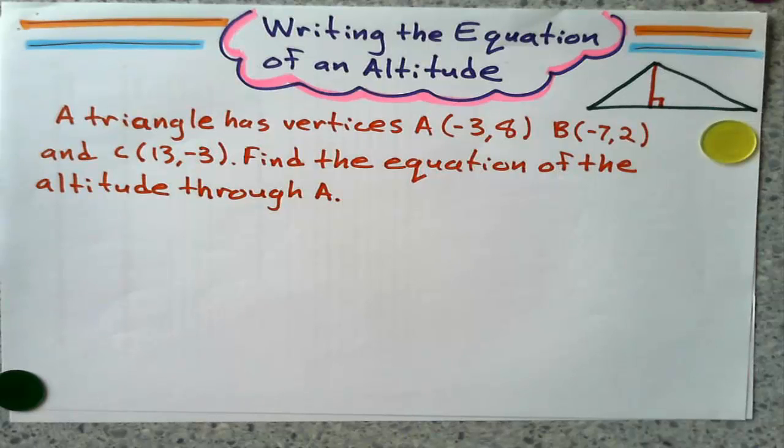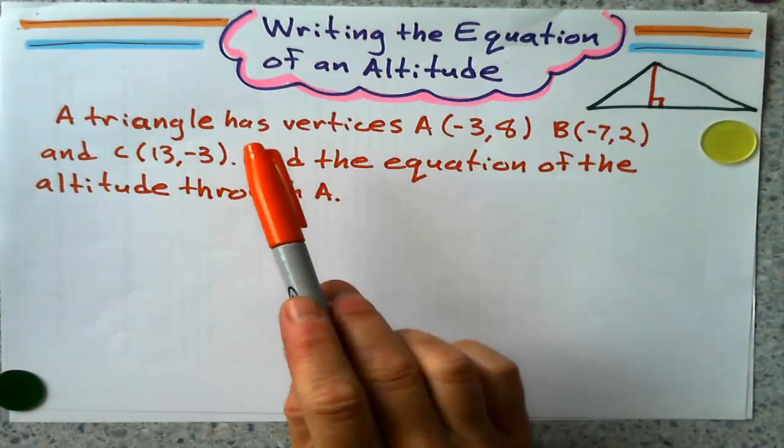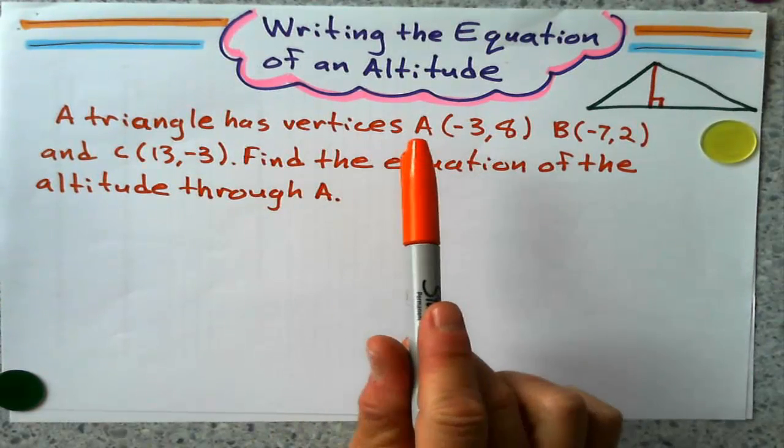Okay, so, writing the equation of an altitude. First, we've got a triangle that has three corners, vertices.